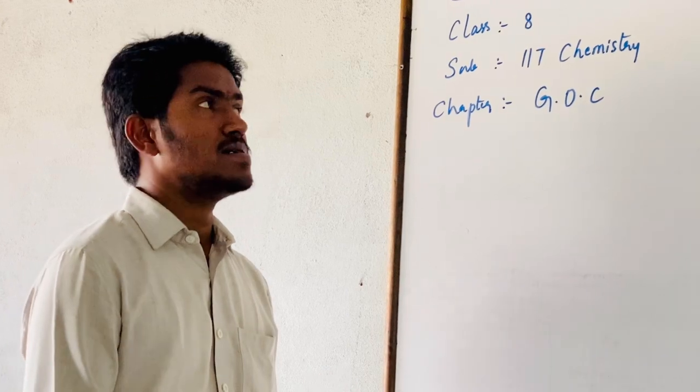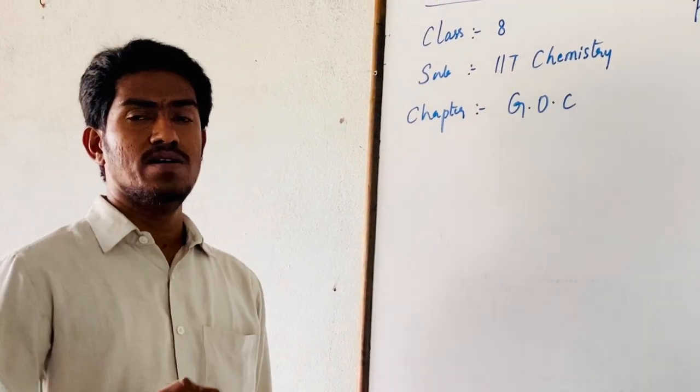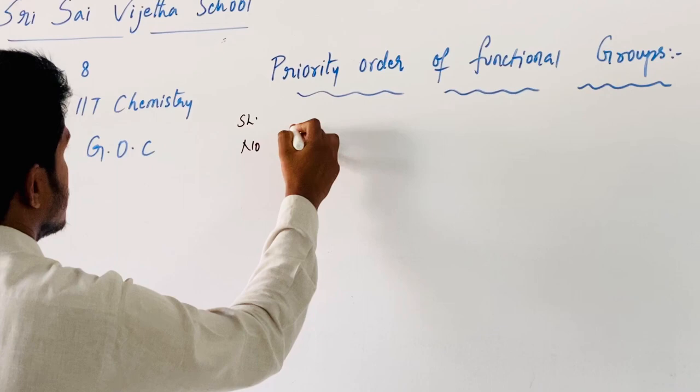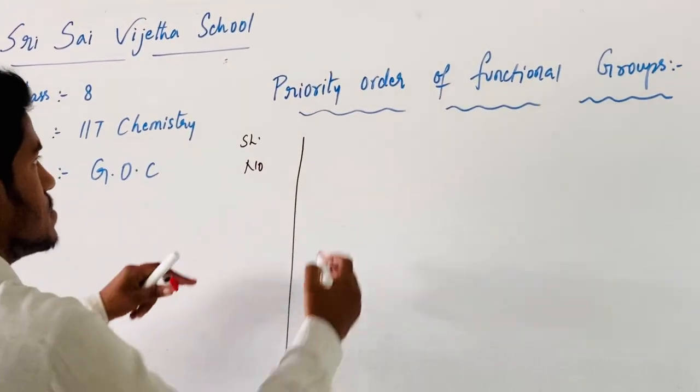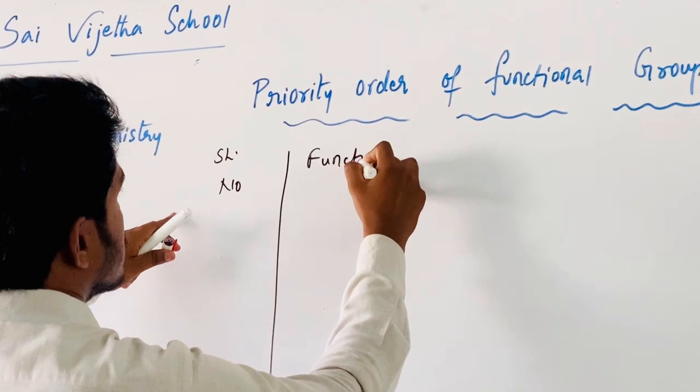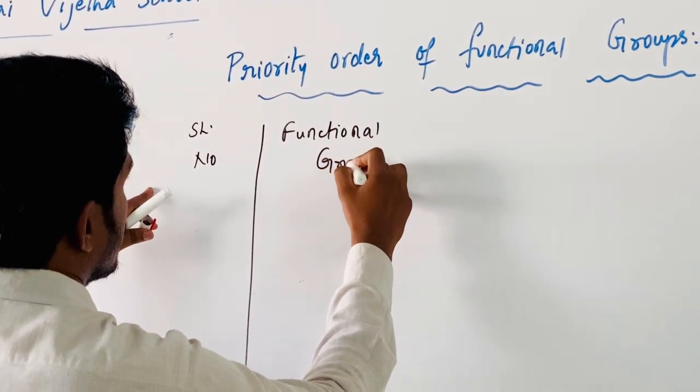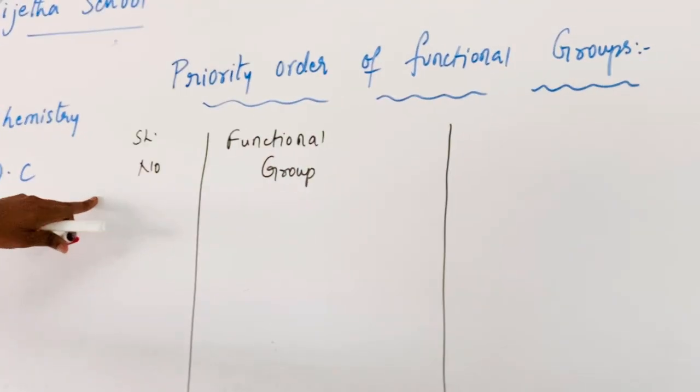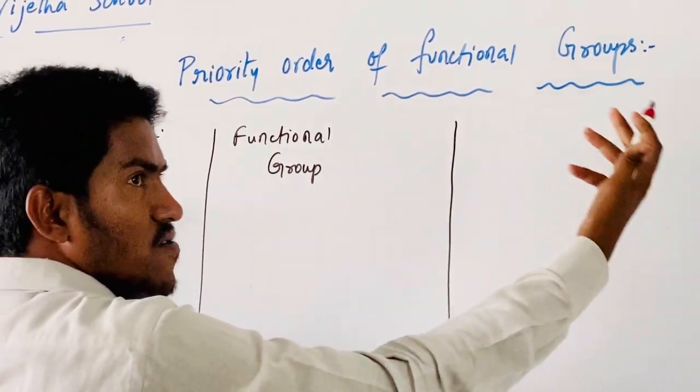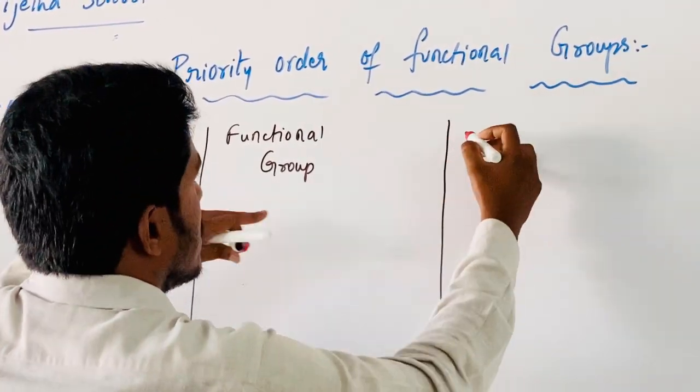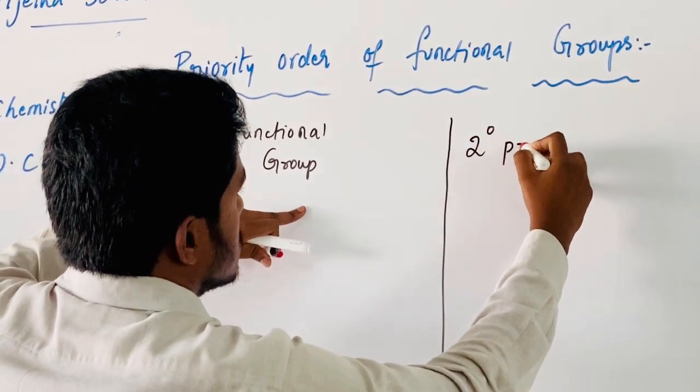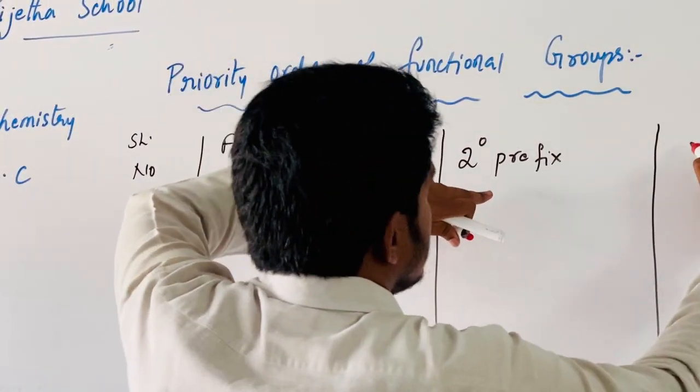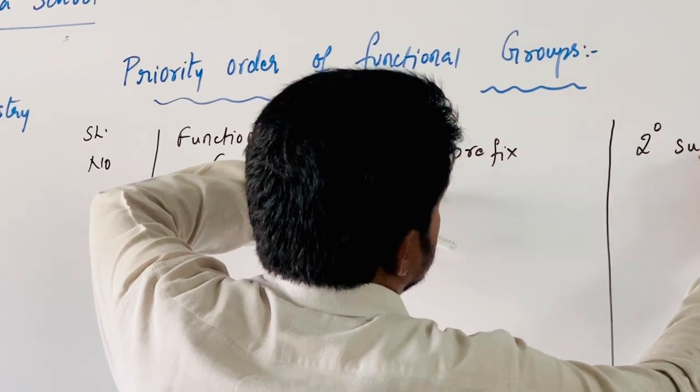The priority order of functional groups gives the minimum position of carbon atom. Now coming to the priority rule here. First one is serial number and second column is explanation about functional group. Coming to its prefix, if the functional group contains more than one in the given organic compound, then it is considered as secondary prefix. More than one functional group, then it is considered as secondary suffix.